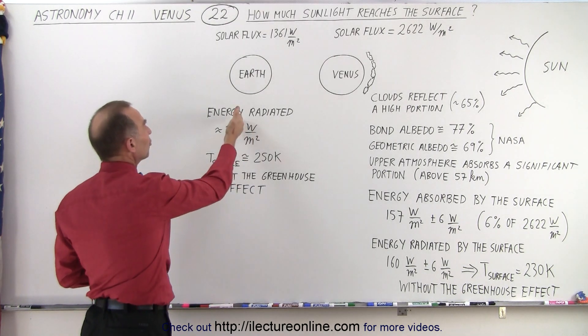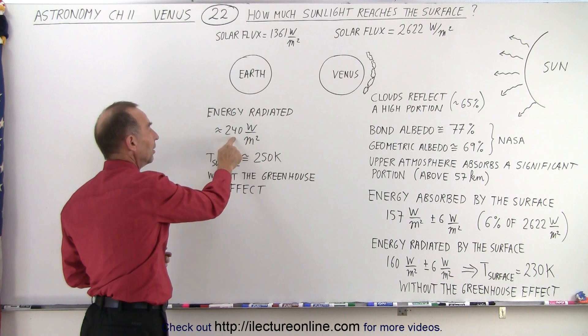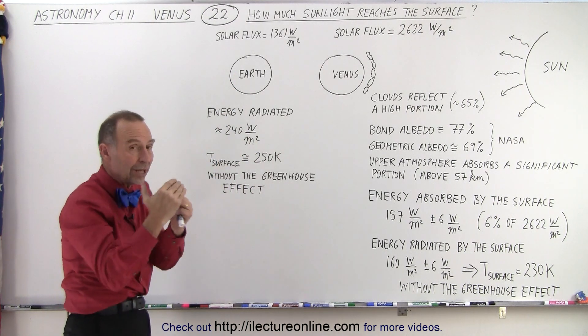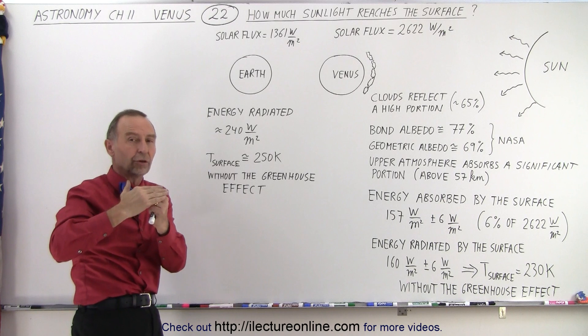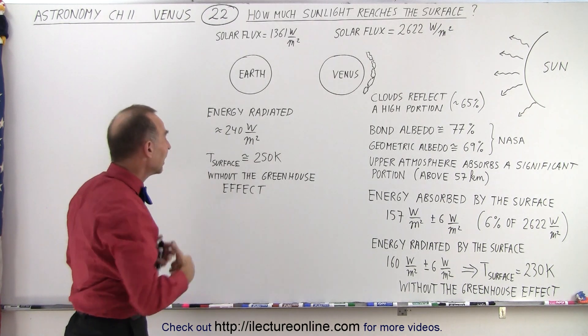On the Earth, the amount of energy radiated by the surface is much greater. It's about 240 watts per square meter, so a much greater proportion of the energy makes it to the surface and then gets radiated back.